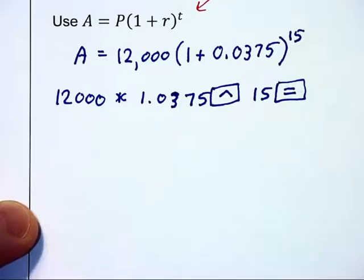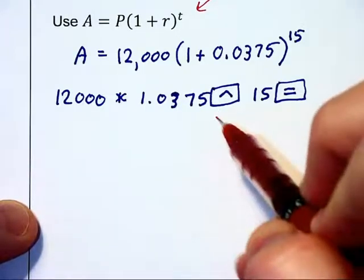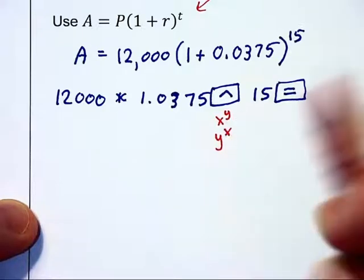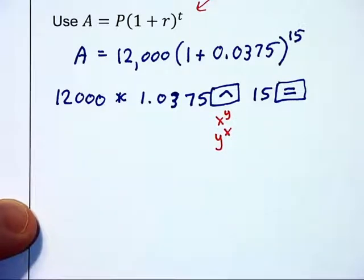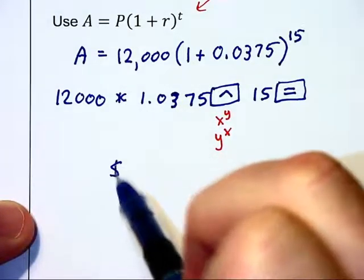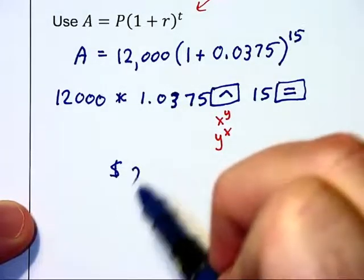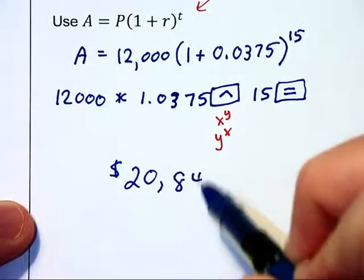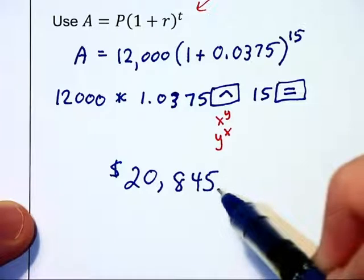Now you might not have this up caret key. You might be using an X to the Y or a Y to the X key on your calculator. It just depends on what you have. And then because we are dealing with money, we are going to want to round to the nearest cent. So the answer here is $20,845.04.